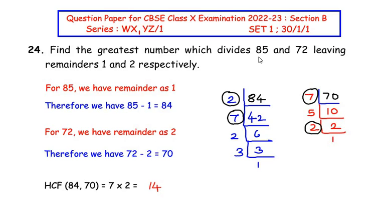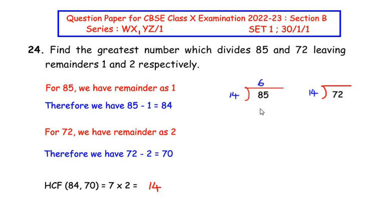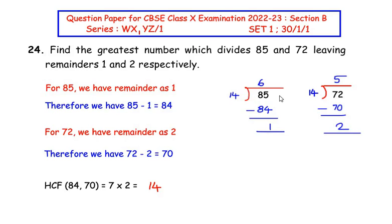We found that the greatest number dividing 85 and 72 leaving remainders 1 and 2 is 14. To verify: 14 × 6 = 84, so dividing 85 by 14 gives remainder 1. Similarly, 14 × 5 = 70, so dividing 72 by 14 gives remainder 2, exactly as given in the question. We have verified that the HCF is 14.